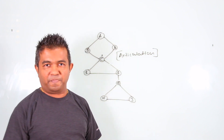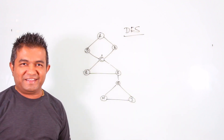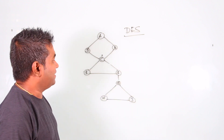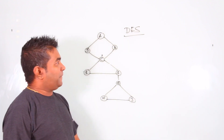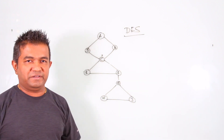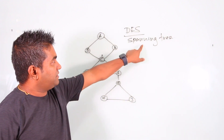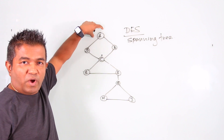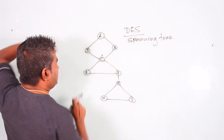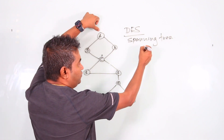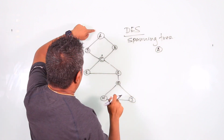Today we are going to programmatically figure out what are the articulation points of this graph. To do that, we are going to use DFS — that's why in the last video I explained DFS and BFS. Now I'm going to build the DFS spanning tree. The DFS spanning tree means: selecting one node and traversing through the graph using the DFS algorithm and drawing the tree of that traversal. Let's take A as the starting vertex.